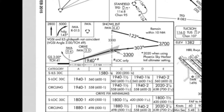The minimums are shown at the bottom of the plate in different categories — A, B, C, D — based on your stall speed in landing configuration times 1.3. The first number is either your minimum descent altitude or decision altitude, the next number is visibility in miles, and the following number is height above threshold. For circling minimums, that number is height above the airport, not height above threshold.